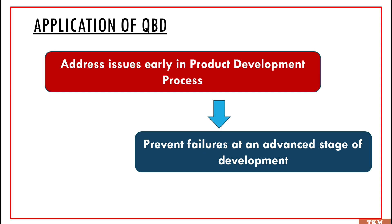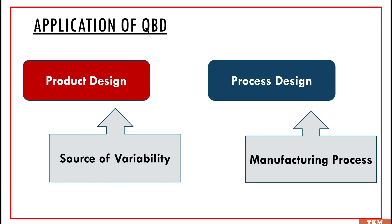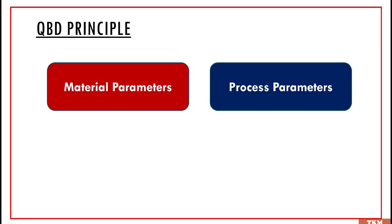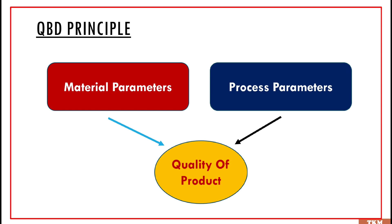Nowadays, especially in pharmaceutical industries, they no longer can carry out any project without taking into consideration the ICH guidelines. And since QBD is a part of ICH guidelines, the pharmaceutical industry has to follow the QBD approach. The application of QBD in product design and process design is based on good understanding of sources of variability and the manufacturing process.